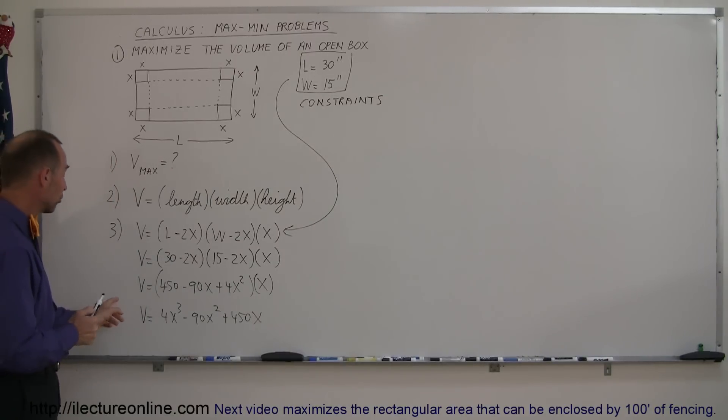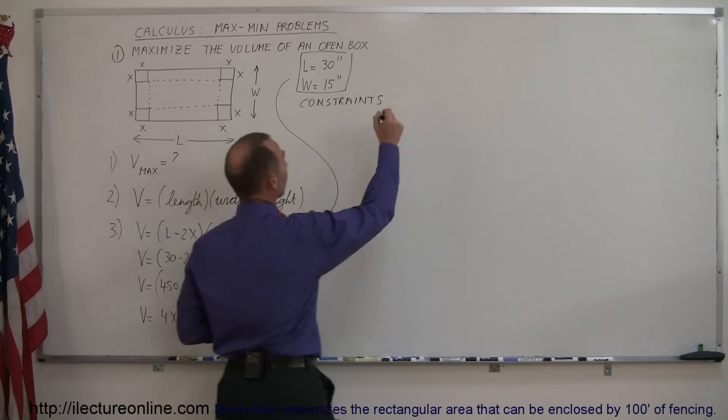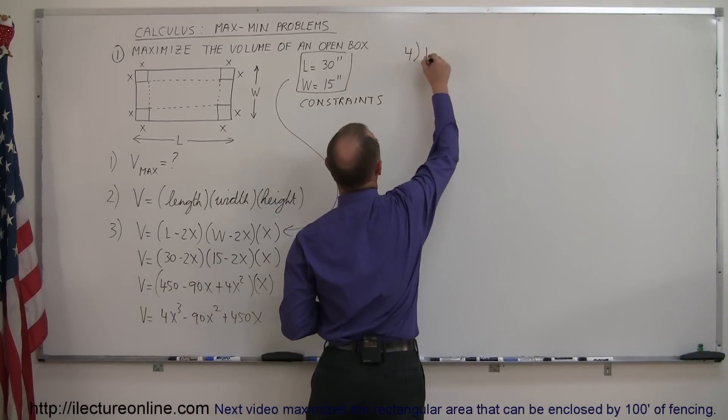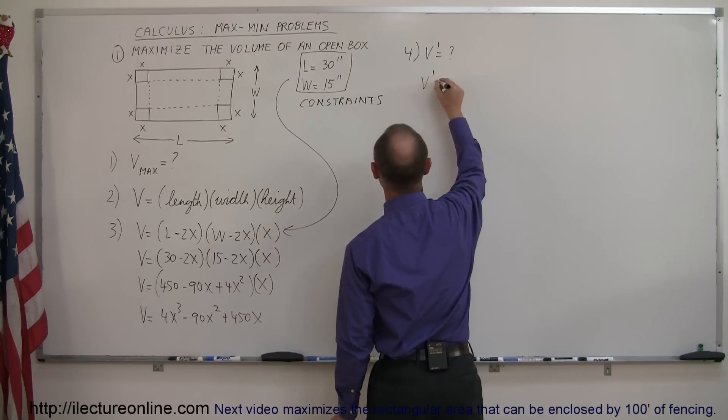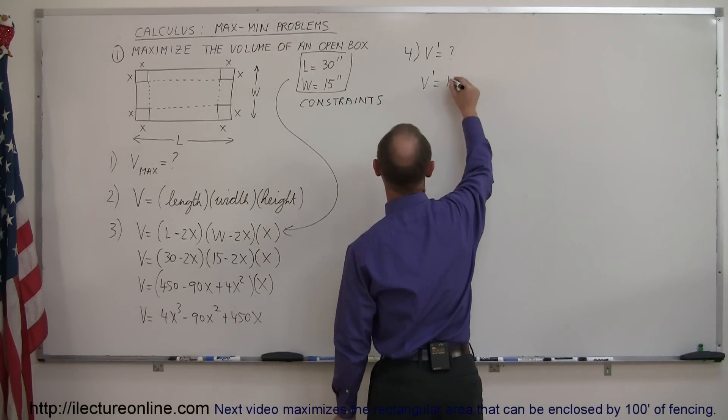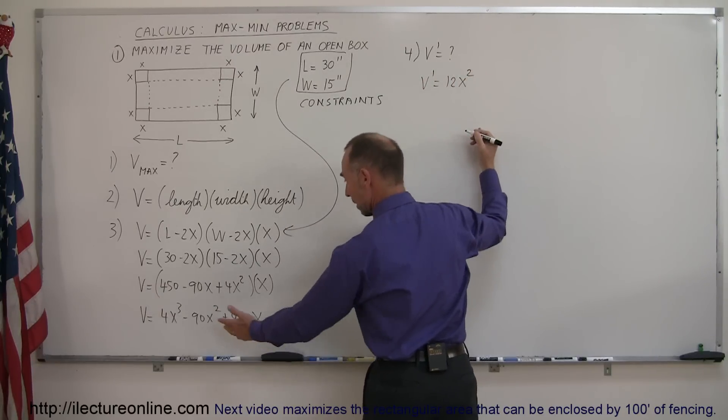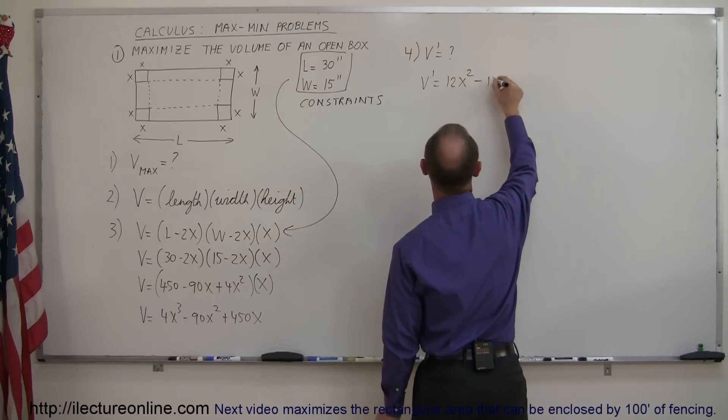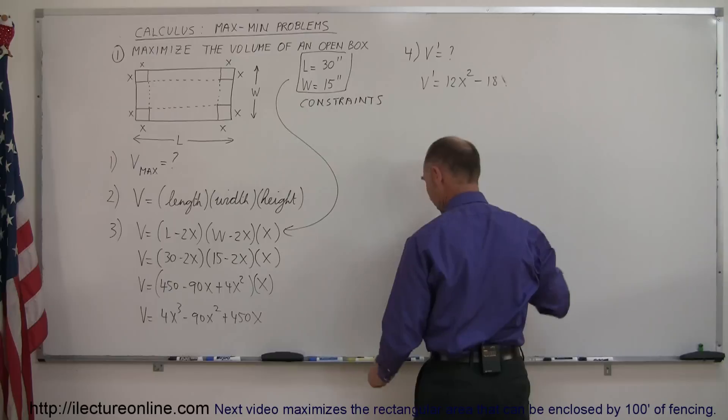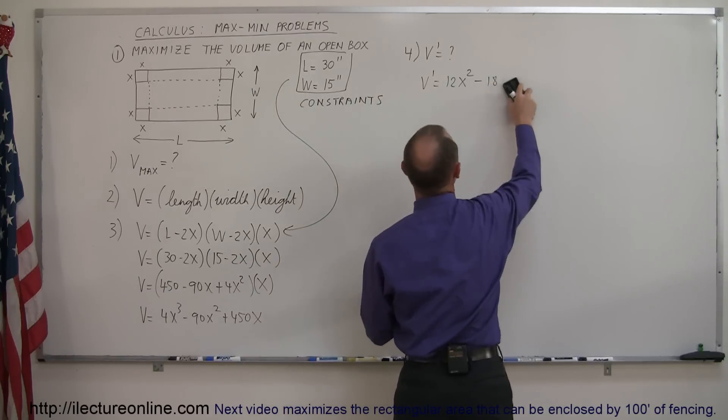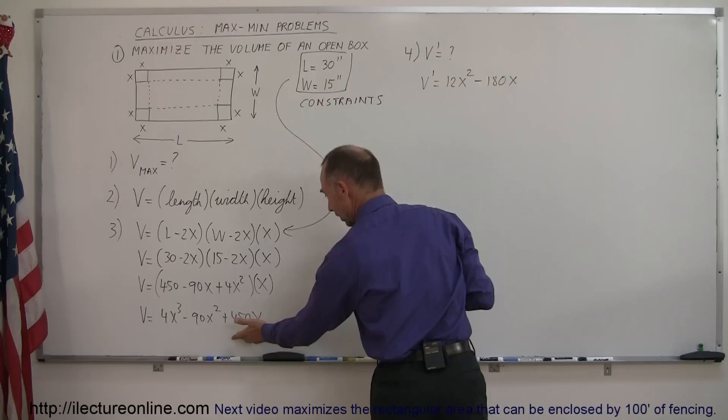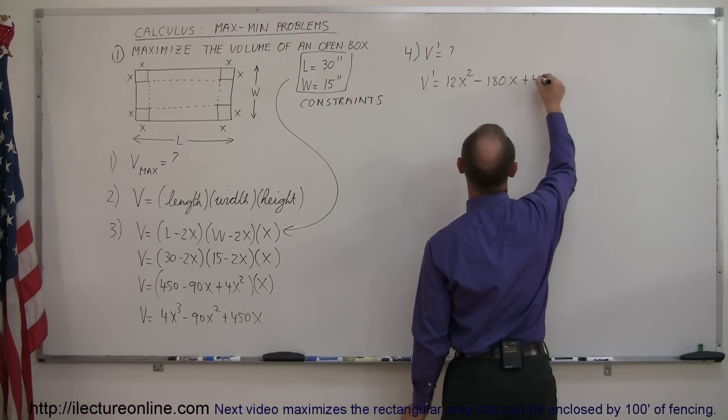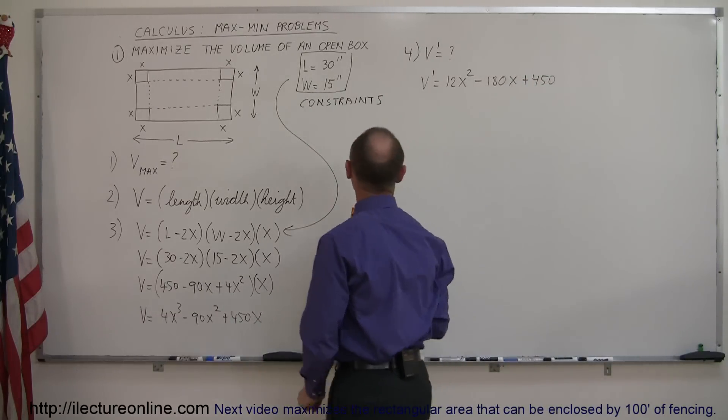Next thing we want to do is take the derivative of that equation, so step 4. V prime is equal to question mark, so what's the derivative of this? V prime is equal to 12x squared minus 180x, and then finally when I take derivative of that would be plus 450. That was step 4.